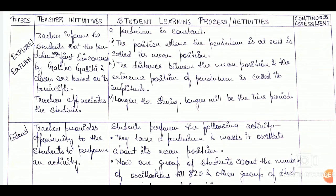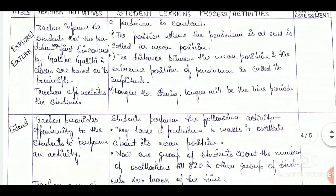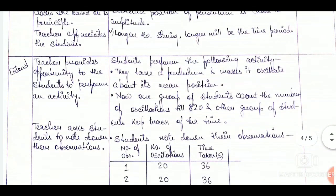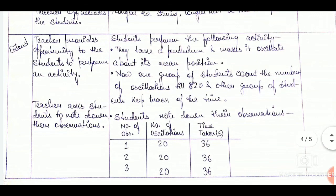Now we are moving on to explore and explain. This is a constructivist lesson plan for a constructivist classroom. The teacher's work is just to encourage and motivate students to take active participation in the teaching-learning process. In the lesson plan, we can see that the teacher initiatives column is pretty narrower than that of the students' learning process column.